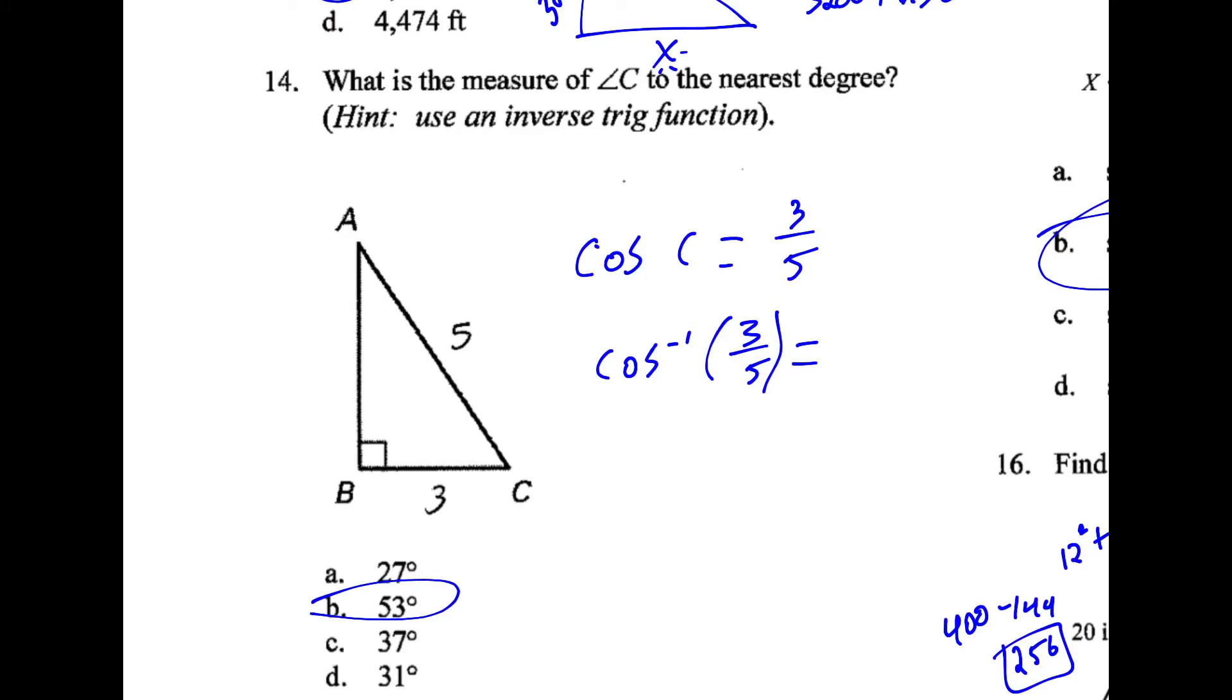Number 14, since I know that the cosine of angle C is 3 fifths, I just take the inverse cosine of 3 fifths and I get 53 degrees as long as I'm in degree mode.